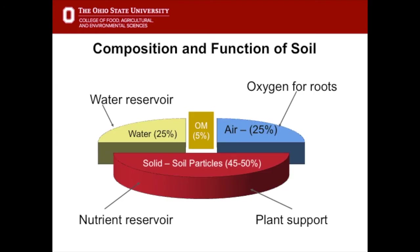In an ideal situation, if this was a lump of soil, 50% of that would be the solid particles — sand, silt, and clay. There would be about 25% water held in the soil, 25% oxygen or air spaces, and anywhere from 3 to 10% organic matter, which is dead and dying roots, stolons, rhizomes, stems, etc.